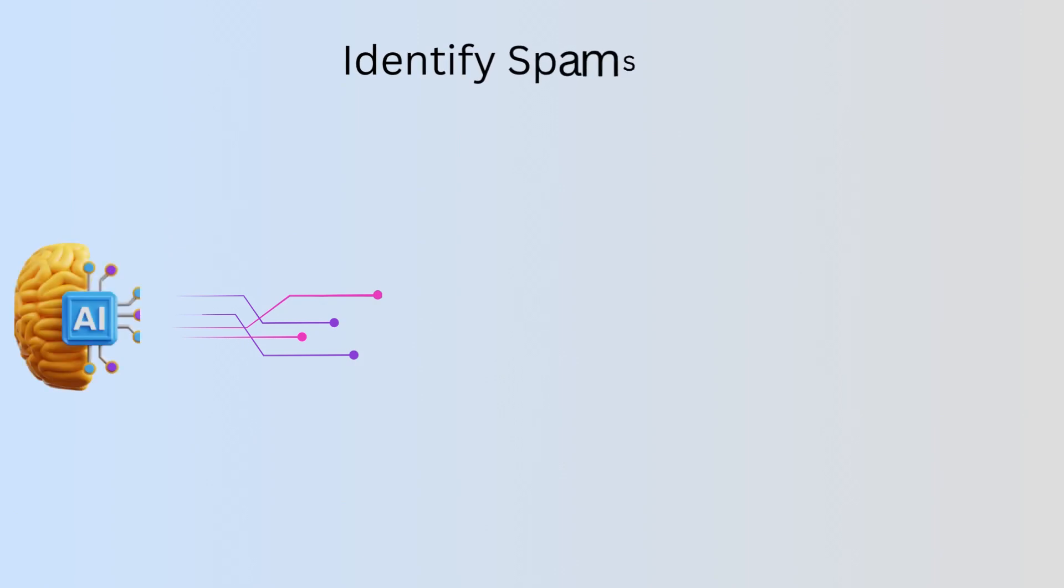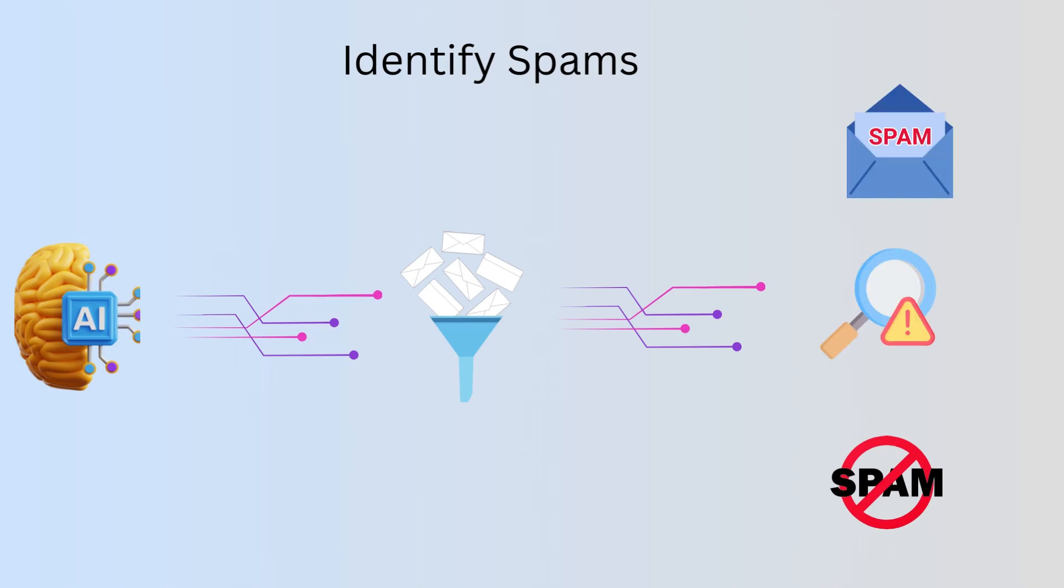AI is used to train spam filters to identify and block unwanted emails. Spam filters can learn to recognize patterns in spam emails, and they can adapt to new spam techniques over time.